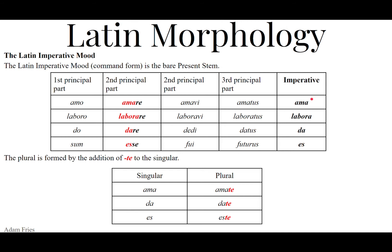For the plural — talking to more than one person — add -TE: AMATE, LABORATE, DATE, ESTE. You've actually been introduced to this from the very beginning. 'Salve,' meaning hello or hi, is the imperative of the verb salveo, meaning to be well — I'm commanding you to be well. 'Salvete omnes' is the plural imperative: I'm ordering all of you to be well. Similarly, vale and valete mean be well, fare ye well — what is goodbye but an imperative to be well?